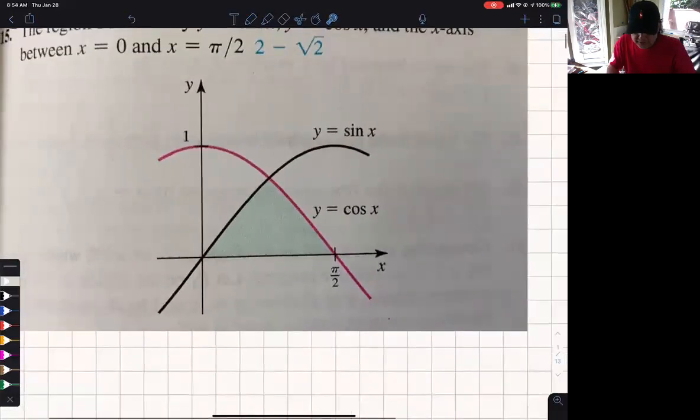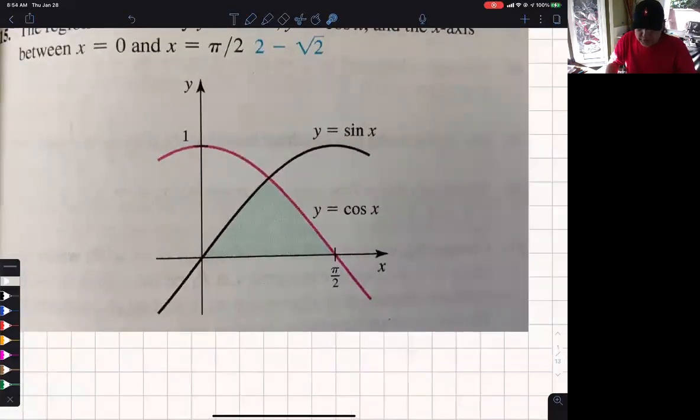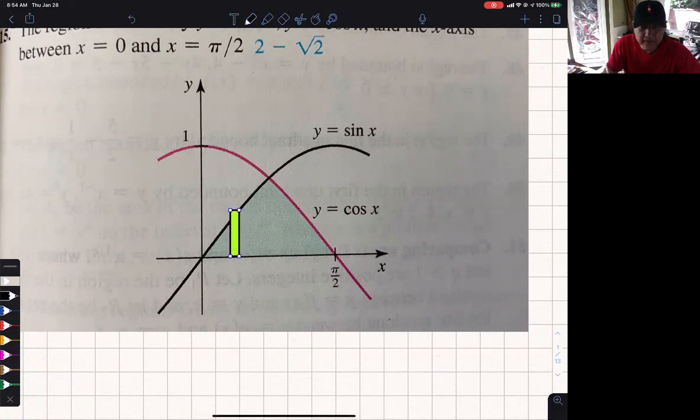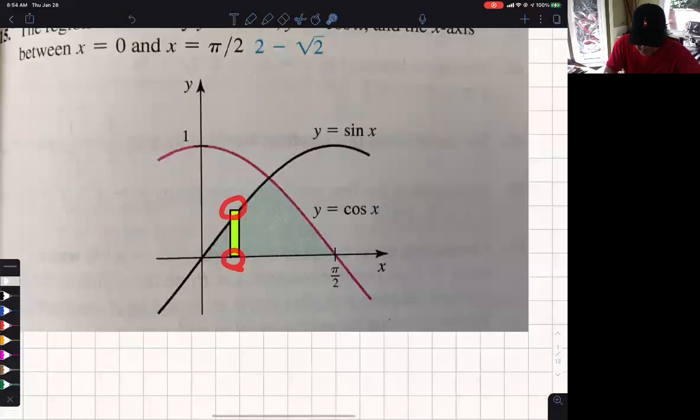So basically that green-shaded region. Now as you do this, you'll notice something here, and let me draw. So here is a rectangle over here. The height is the black function minus the x-axis, but when you get to this portion here, something changes.